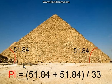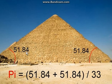And we can find the number pi here. How? 51.84 plus 51.84 — we sum these two angles and we will get a number. When we sum that we will get 103 point something. And when we divide that — 51.84 plus 51.84 — with 33, we will get the number pi. So pi is hidden in this calculation.